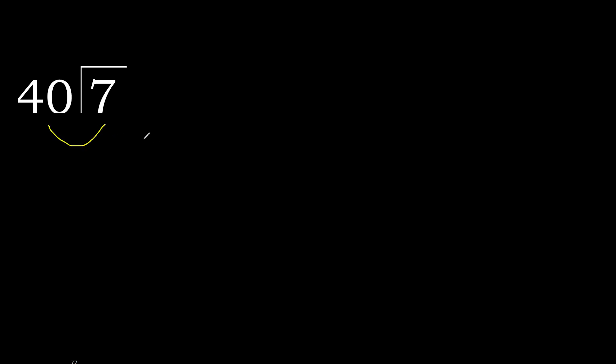7 divided by 40. Since 7 is less than 40, we always complete with a zero. Here, write 0 point.